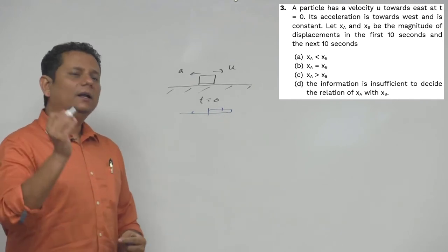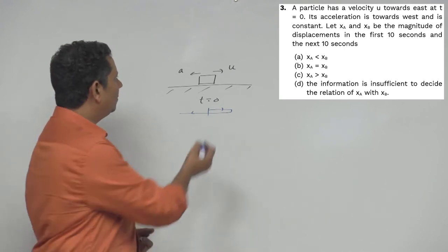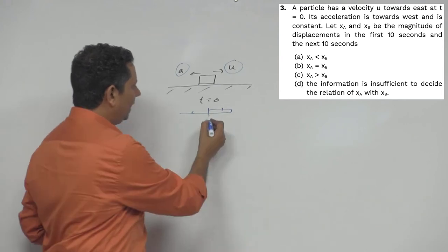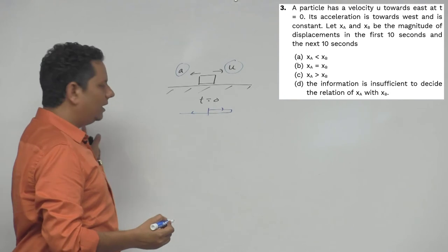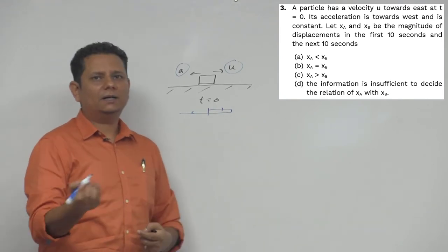On this basis, we cannot predict the information, for the simple reason that we don't know the actual values of u and a. It's possible that in the first ten seconds the particle took a turn and came back here or went there, making it equal, less, or more.